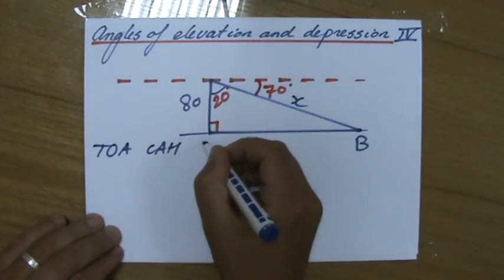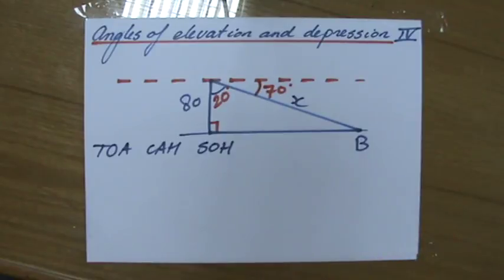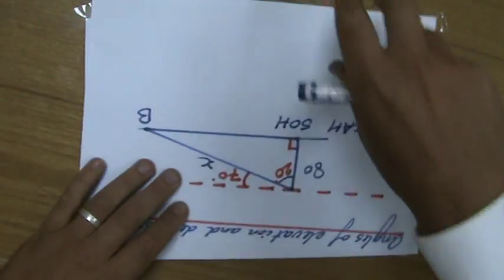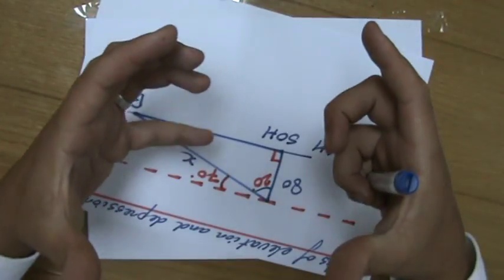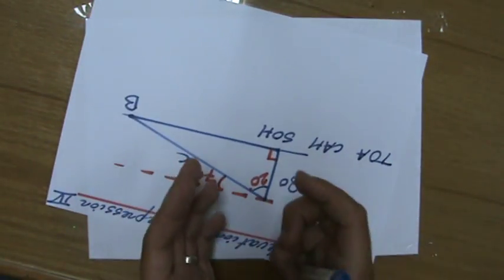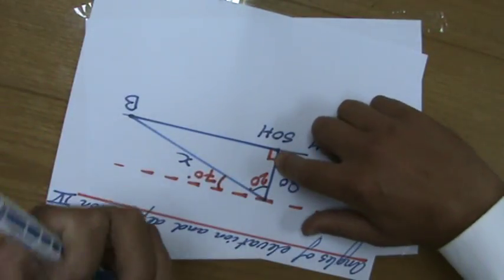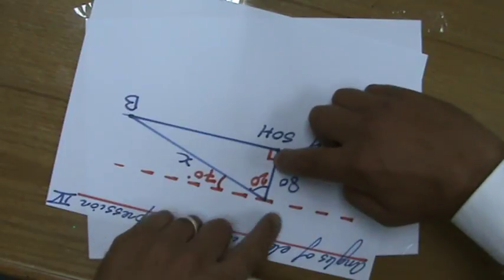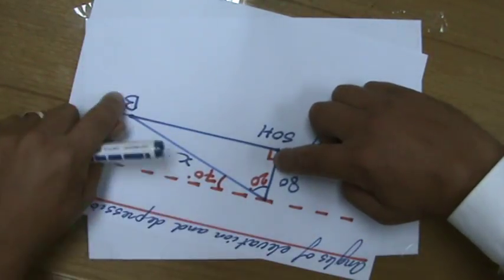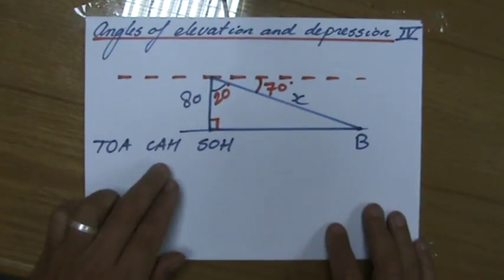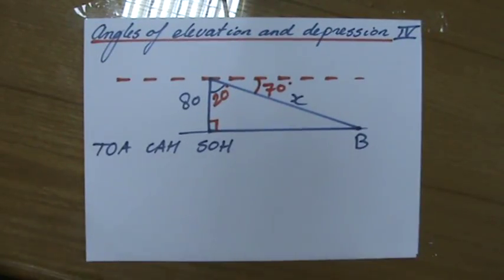TOA CAH SOH, the three ratios. I always turn it around because I have to decide which ratio to use. I'm in my angle, physically there, and I have the adjacent and I'm looking for the hypotenuse. Adjacent, hypotenuse, cosine. You're absolutely right.